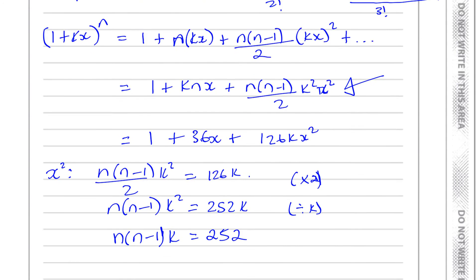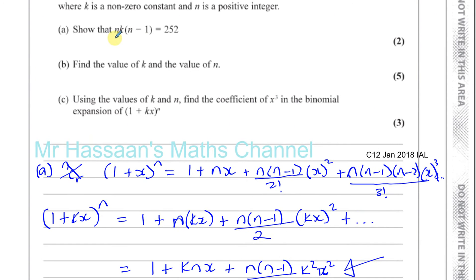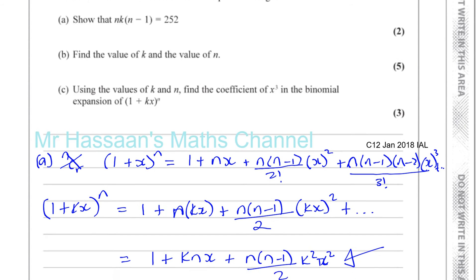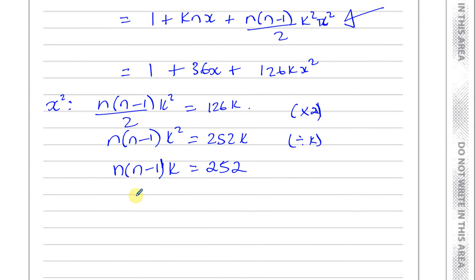And I think that's exactly what they asked us to show. n times n minus 1 times k equals 252. Okay, they just wrote the k next to the n there, which I can do here, so just to make it look the same. n times k times n minus 1 equals 252. Okay, that's as required. That's the end of part a.